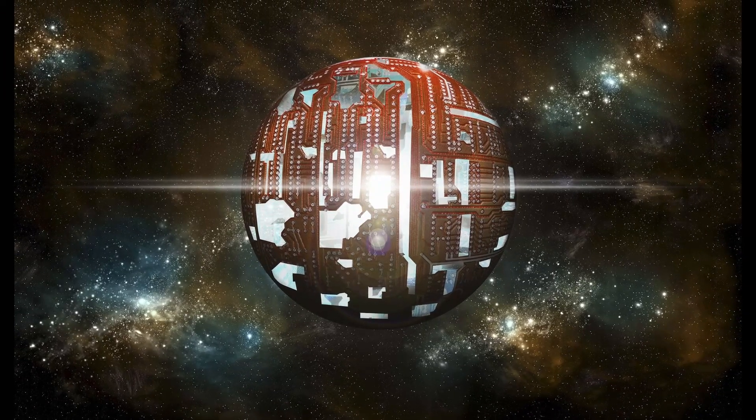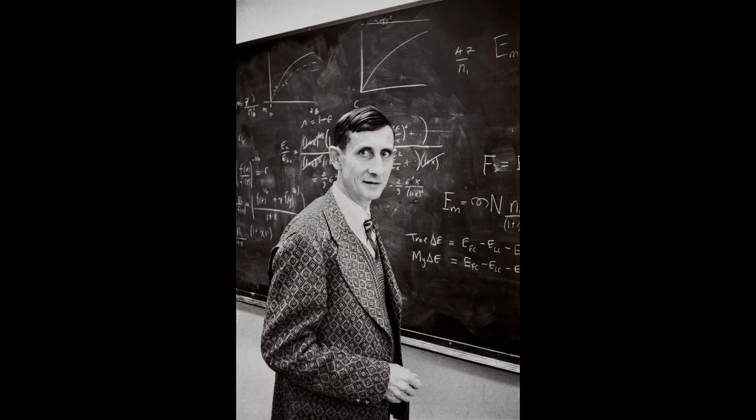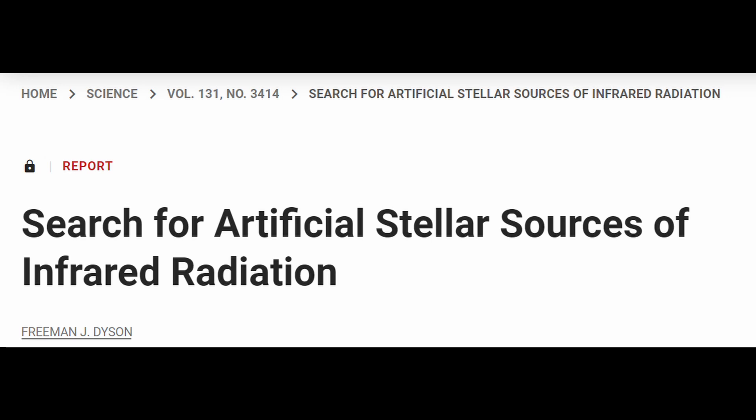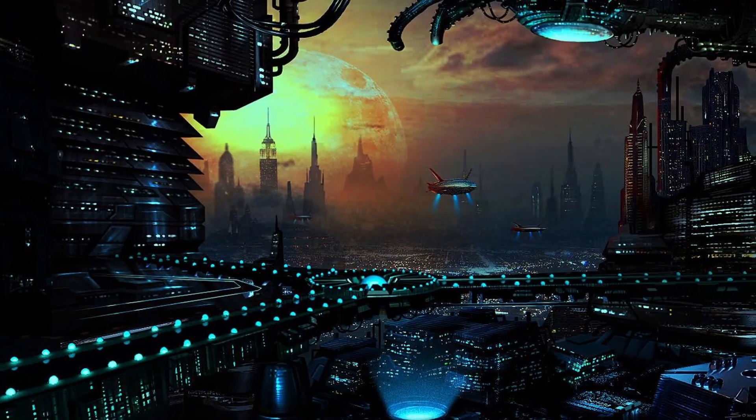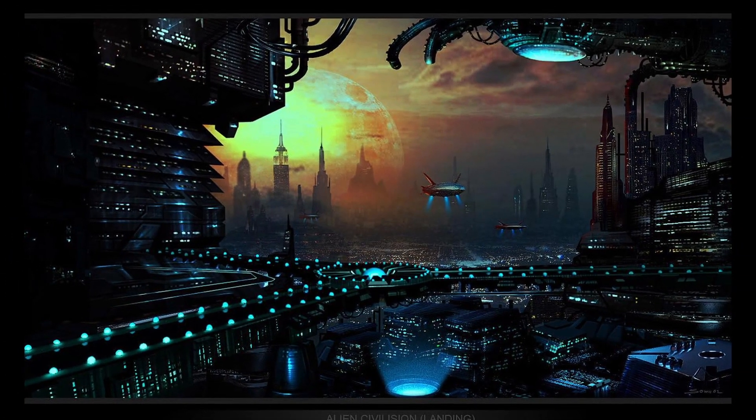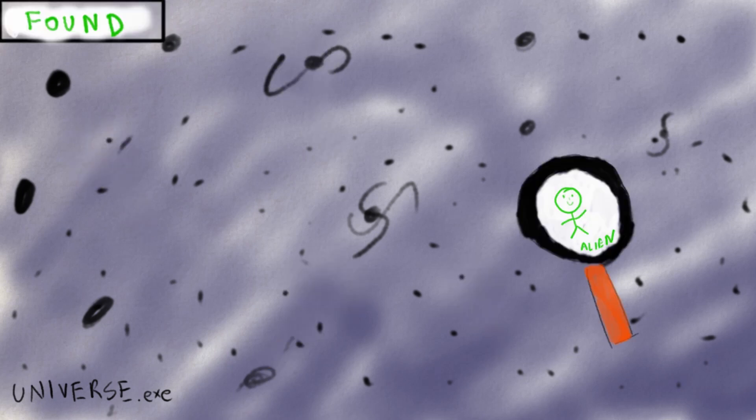The idea of Dyson Spheres was popularized by a guy named Dyson, Freeman Dyson. Who would have guessed? In his 1960 paper named Search for Artificial Stellar Sources of Infrared Radiation, he speculated that such structures would be a logical consequence for the escalating energy needs of a technological civilization and would be a necessity for its long-term survival. He proposed that searching for such structures in the universe would lead to the detection of advanced intelligent extraterrestrial life, aka aliens.